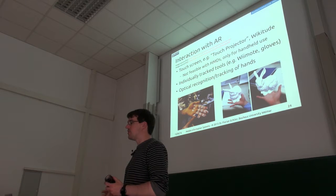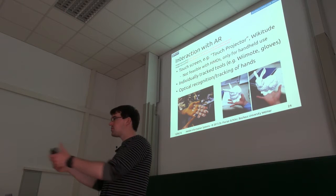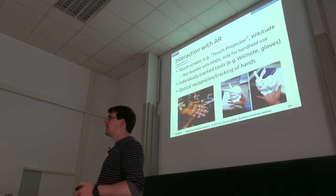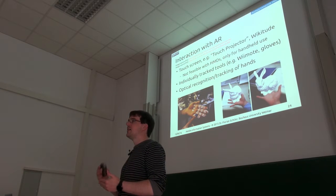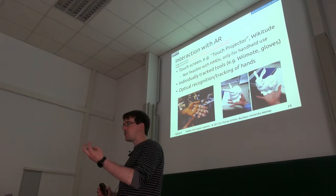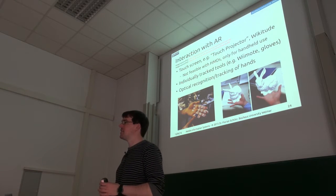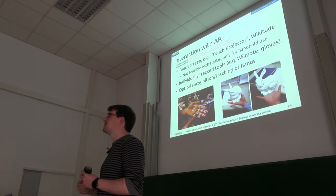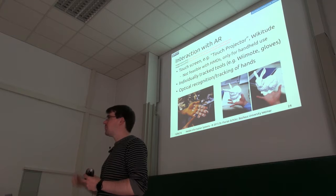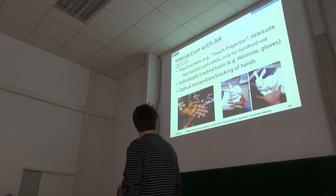What's sometimes done — and what is done in virtual reality, for example with the HTC Vive — is to give the user tracked controllers, which you can use to interact with virtual content. But the most straightforward solution for the user would be optical hand recognition and tracking: actually determining how the hand is held. One self-built solution I've seen was mounting a Leap Motion camera in front of an Oculus Rift, which lets you track the hands and directly interact with virtual content.